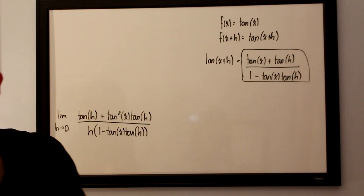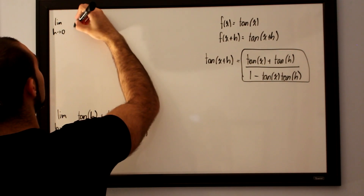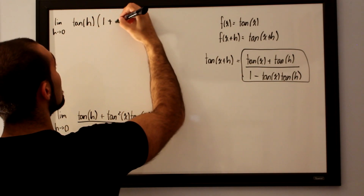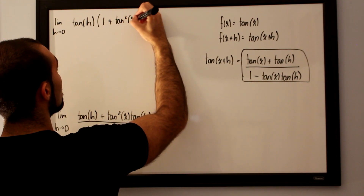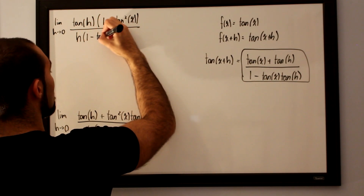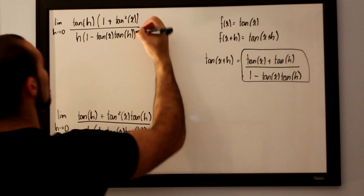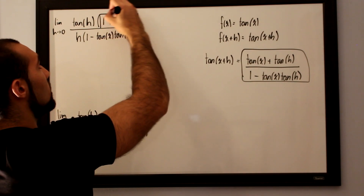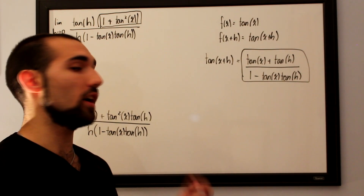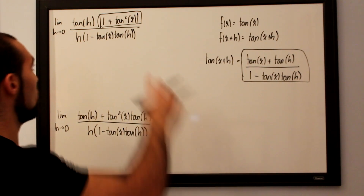Starting fresh: if we factor a tan(h) out of the numerator, we are left with the limit as h approaches 0 of tan(h) multiplied by 1 plus tan²(x). Now, 1 plus tan²(x) is a trigonometric identity — especially important in calculus — and it equals secant squared of x. So we substitute that in, giving us tan(h) multiplied by sec²(x).